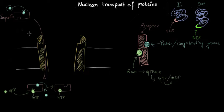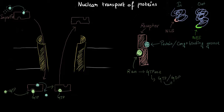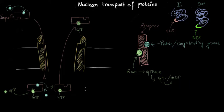The importin receptor, now bound to RAN-GTP, moves out of the nucleus. But think about this: if RAN keeps coming out of the nucleus with the importin, the concentration of RAN inside the nucleus would deplete. If RAN is absent, it won't bind to the importin receptor, the cargo won't fall off, and the transport will fail.